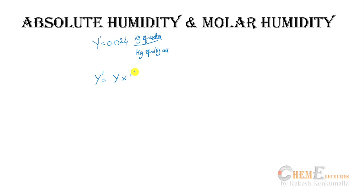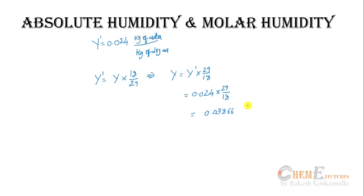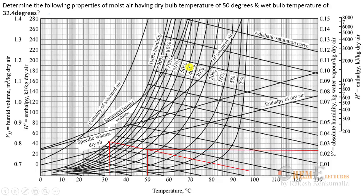Molar humidity Y is related to absolute humidity Y' by: Y = Y' × (29/18). Substituting Y' = 0.024: Y = 0.024 × 29/18 = 0.03866 kilomole of water per kilomole of dry air. This is the molar humidity. Units are important when substituting in any equation. So far we have absolute humidity and molar humidity.